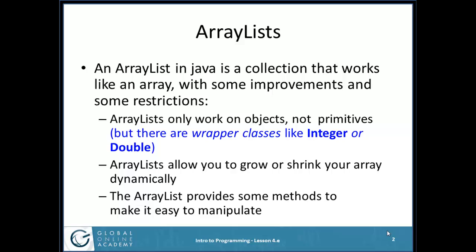An array list in Java is a collection that works like an array, but it's got some improvements and some restrictions. Array lists only work with objects, not primitives. Remember, we could have an array of ints, but I can't have an array list of ints. I can only have an array list of objects. However, Java has built-in classes called wrapper classes, like Integer with a capital I or Double with a capital D, that work just like the primitive int or double.